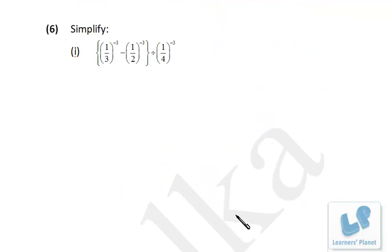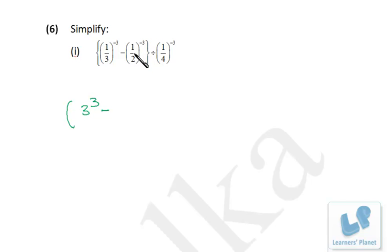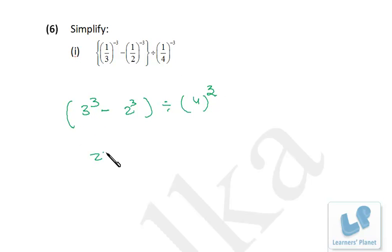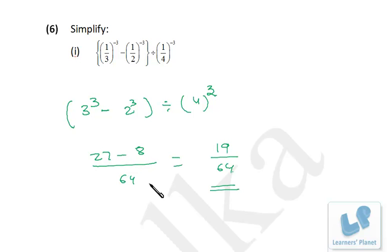Now we have to do simplification of this expression. First, let's solve the value inside the bracket. Start from here: 1 upon 3 with negative exponent — to convert to positive, write the reciprocal of 1 by 3, which is 3. So it is 3 cubed. Similarly, the reciprocal of 1 by 2 is 2, so the negative exponent converts to positive, giving 2 cubed. Reciprocal of 1 by 4 is 4, so minus 3 converts to 3. Now: 3 cubed is 27, 2 cubed is 8, divided by 4 cubed which is 64. So 27 minus 8 is 19, and this is 19 over 64.